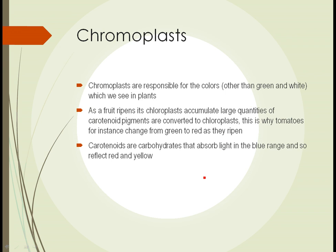Chromoplasts are another type of plastid, responsible for the colors other than green or white that we see in plants. If you see a red flower, a red apple, or an orange, it has those colors because of chromoplasts. As a fruit ripens, its chloroplasts accumulate large quantities of carotenoid pigments and are converted to chromoplasts — that's why tomatoes change from green to red and most fruits change from green to their final color. Carotenoids absorb light in the blue range; they don't use red or yellow light, which gets reflected.